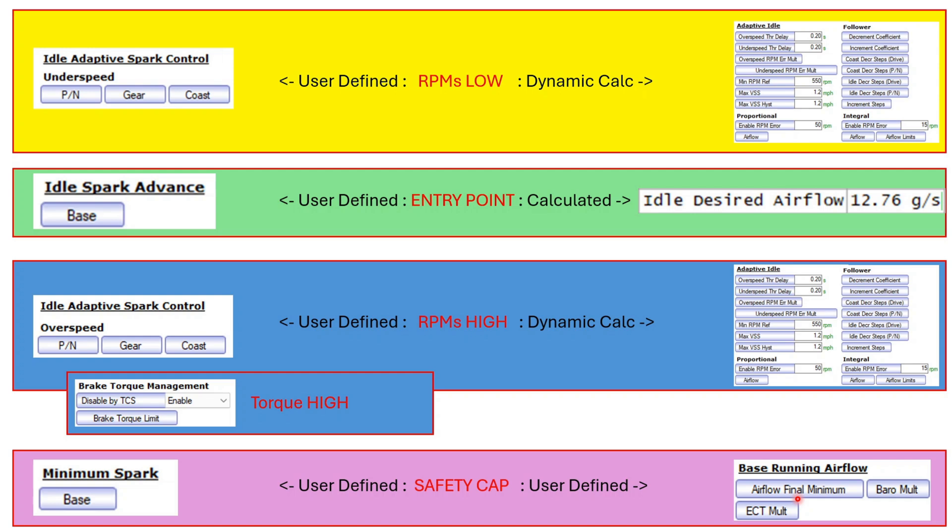Now I'm going to pause here and I'm going to say how do people tune idle? Well, you know, they'll throw in a guess for spark and probably use the stock settings here. And then they're going to come over to here and then they're just going to start pumping up this airflow final minimum. Now that's crazy to me.